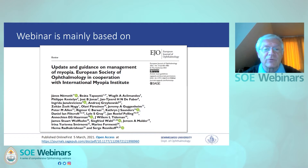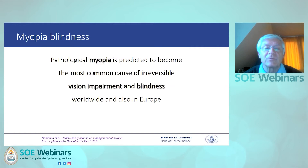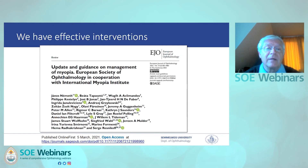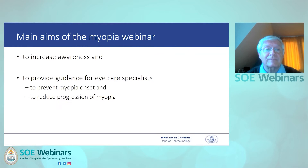Pathological myopia is predicted to become the most common cause of irreversible vision impairment and blindness worldwide, and also in Europe. Here you see the predicted increasing tendency in Europe unless we act now — and we have to act now. We have effective interventions which are described in the guidance and will also be shown during this webinar.